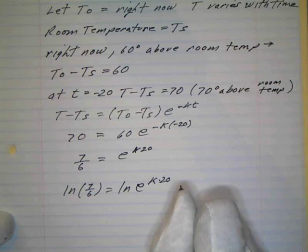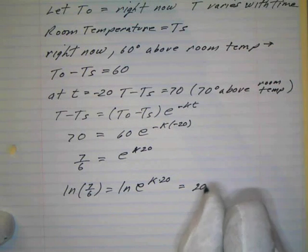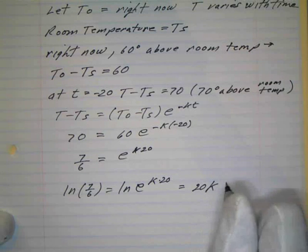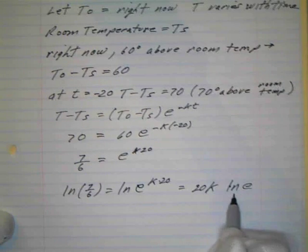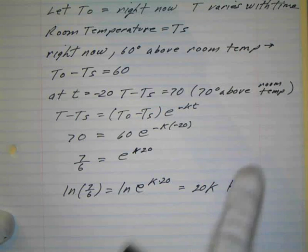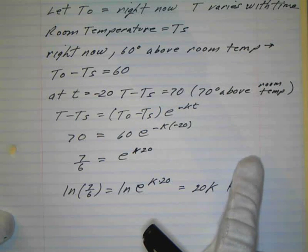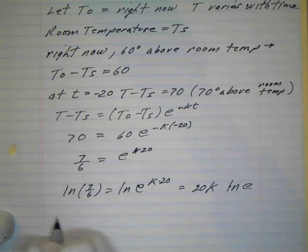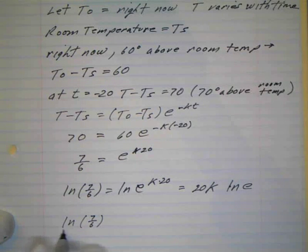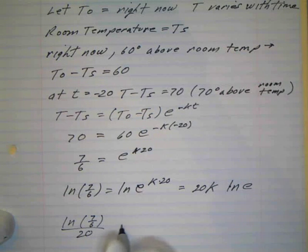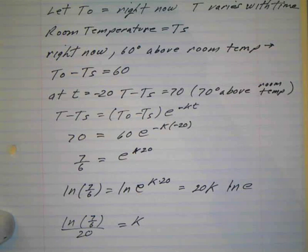k times 20. And then I can bring that up in front. And that's the same thing as, and I'll put the 20 in front, 20k times the natural log of e. But the natural log of e is just 1. So that goes away. So I can divide both sides by 20. And I get the natural log of 7/6 divided by 20 equals k. So there's our k.